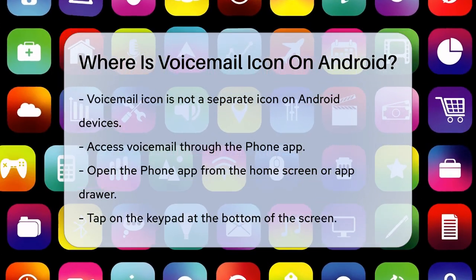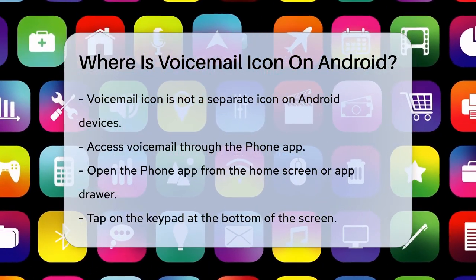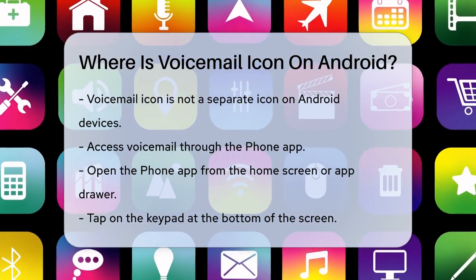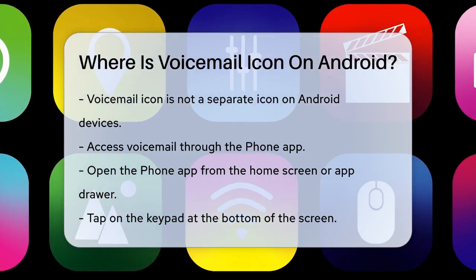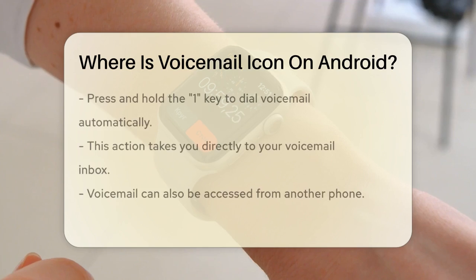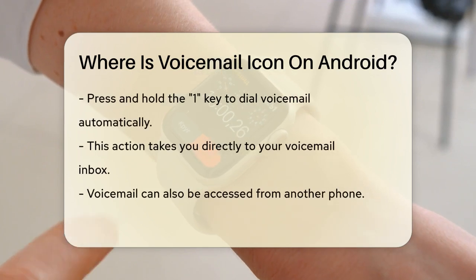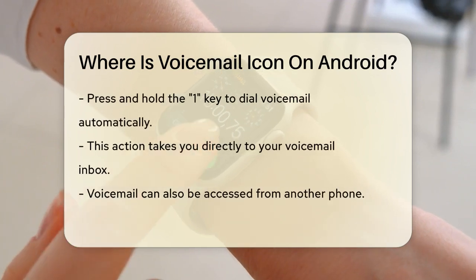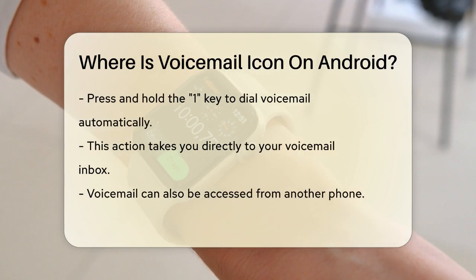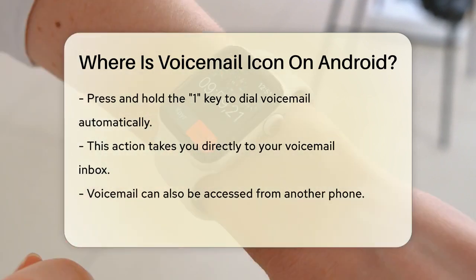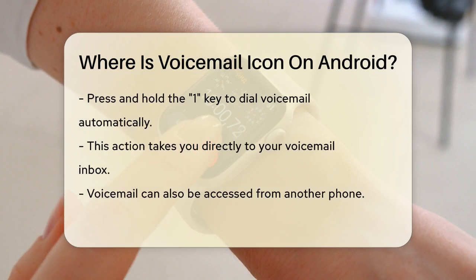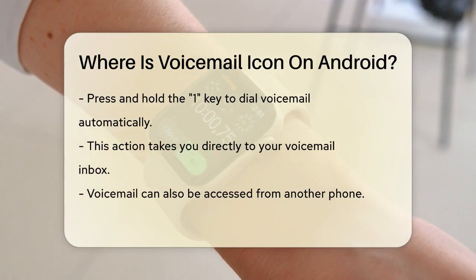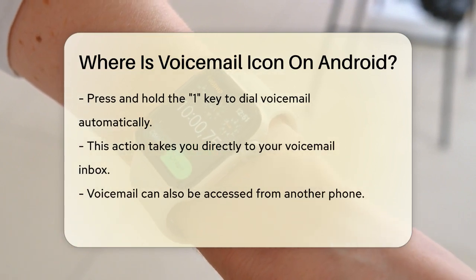Here's how you can do it. Open your phone app, which is usually on your home screen or in the app drawer. Once you're in the phone app, tap on the keypad at the bottom of the screen. Now press and hold the number 1 key. This will automatically dial your voicemail and you'll be taken to your voicemail inbox where you can listen to your messages.